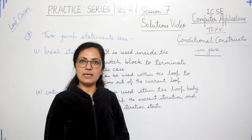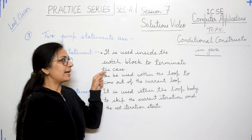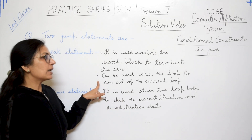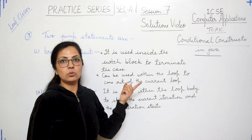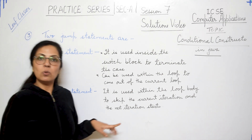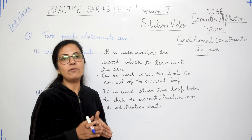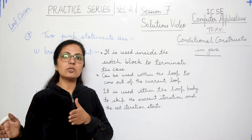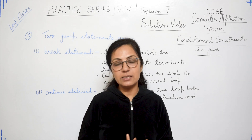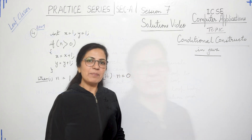Question 3: name two jump statements and their use. First: break — used inside the switch block to terminate the case as the last statement, and can also be used within the loop body to exit the current loop. Second: continue — used only within loops to skip the current iteration; remaining statements of that iteration are skipped and the next iteration starts. There is also a third jump statement — return — and I will make a detailed video for jump statements in Java.